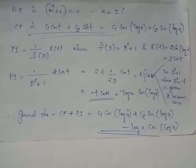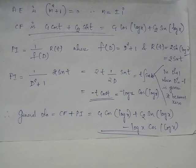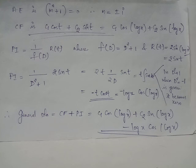To find the corresponding particular integral for equation 1, we again apply the transformation t = log x. Therefore, the particular integral for equation 1 is −log x · cos(log x). The general solution for equation 1 is obtained by adding the complementary function and the particular integral: y = c1 cos(log x) + c2 sin(log x) − log x · cos(log x), which is the required solution.